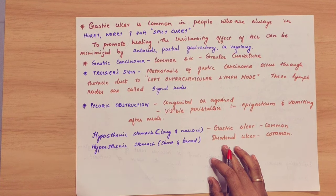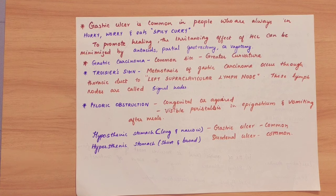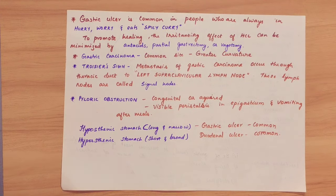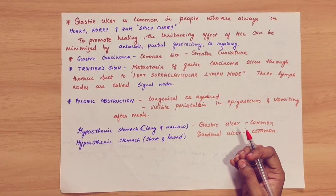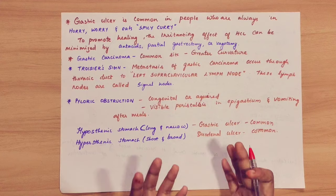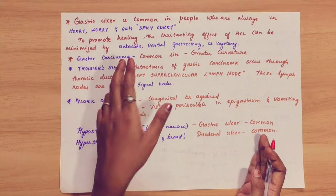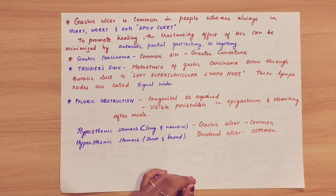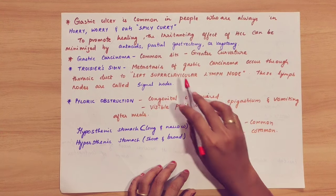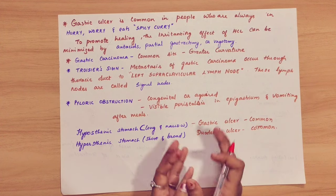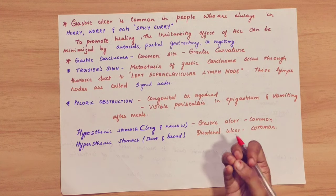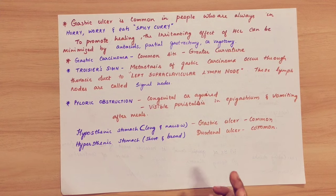To treat gastric ulcer, we need to reduce HCl secretion. If there is a persistent ulcer, we need to perform a partial gastrectomy — cutting and removing part of the stomach. Vagotomy means cutting the vagus nerve branches. Because the vagus nerve stimulates HCl secretion, cutting its branches reduces acid secretion.